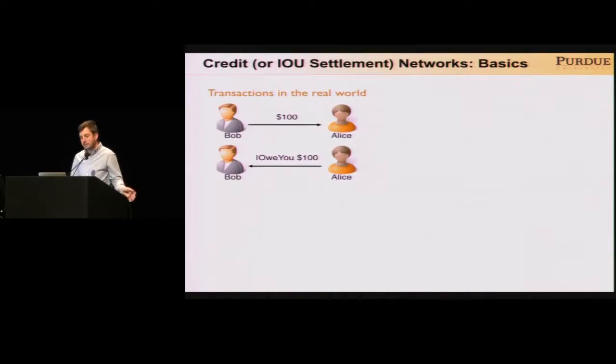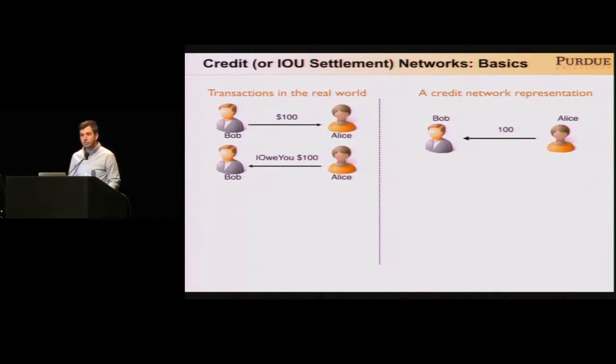Let me start with the basics, and let me start with an example. Credit networks allow us to represent trust between users using credit allocations. Imagine that we have two friends, Bob and Alice, and for some reason Alice needs some money and Bob is kind enough to lend this money to Alice. At this moment, Alice owes $100 to Bob. Such a normal situation in real life can be represented in a credit network with a directed edge from Alice to Bob with a weight of $100.